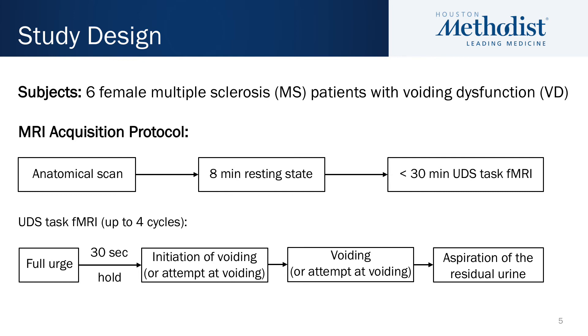During the task scan, subjects press a button to notify us when they feel the full urge, when they start voiding or attempt at voiding, and when they complete voiding.